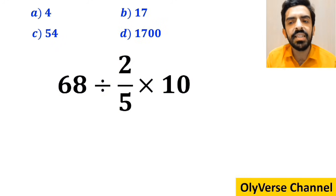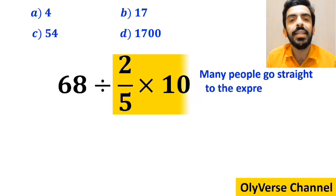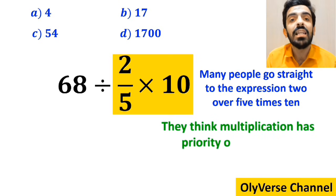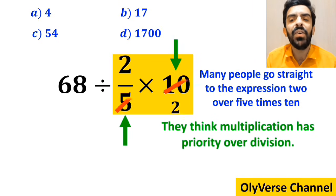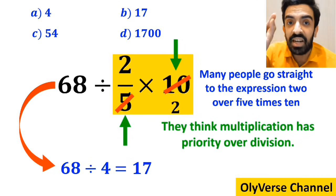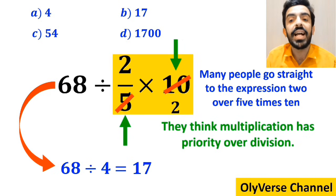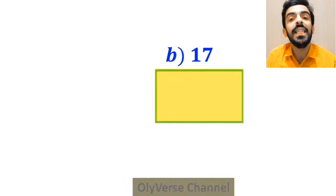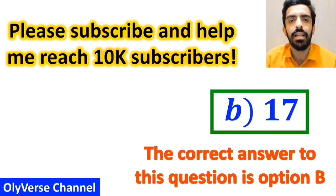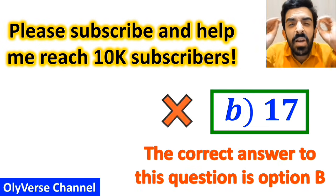At the beginning of solving this question, many people go straight to the expression 2/5 multiplied by 10, highlighted in yellow, because they think multiplication has priority over division. They simplify 10 with the 5 in the denominator and write the expression as 68 divided by 4, which gives the answer 17. Without hesitation, they say option B is correct. However, that's definitely wrong.